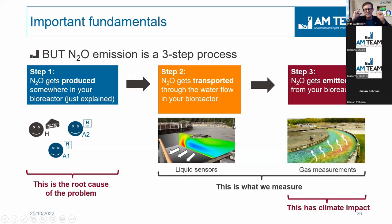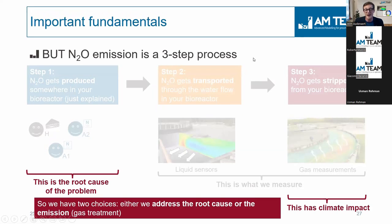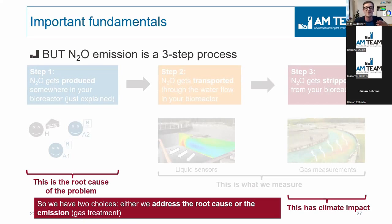From an engineering point of view, we have two choices. Either we address the root cause — avoiding N2O production or lowering it — or we treat the gas as an end-of-pipe solution. For some covered reactors, end-of-pipe works and avoids environmental impact. But in this webinar, we focus on step one, the root cause. We believe that if you understand the root cause, you can really effectively mitigate.